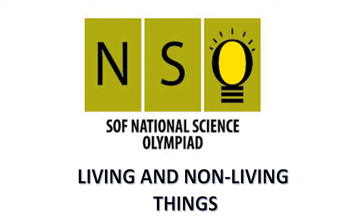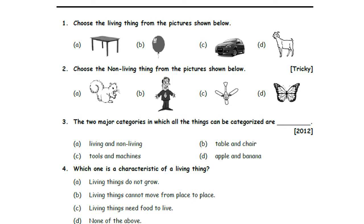Hi Chutikutis! In this video, we are going to see National Science Olympiad Chapter 1: Living and Non-living Things. My dear kids, you all know about what living things and non-living things are. Living things can reproduce, grow, feel, and move from one place to another by their own. They also need food, water, and air to survive. Non-living things cannot move, cannot grow, and cannot reproduce. Come on kids, let's start.